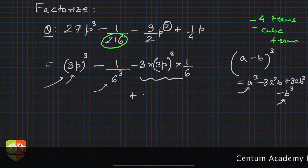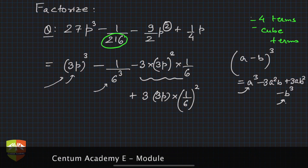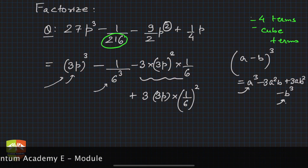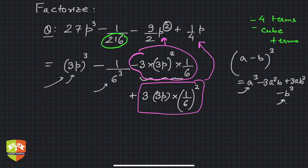Then go for the next one. Here also you need a 3, so let's take out a 3. Then you need 3 × 3p × (1/6)². See whether it is (1/4)p - actually it is (1/4)p. So hence this term matches with that term.